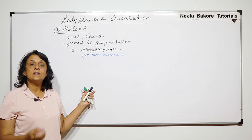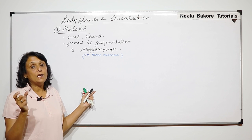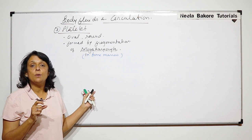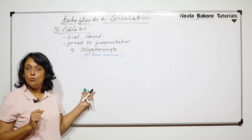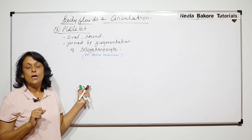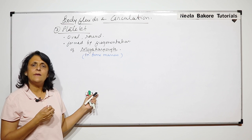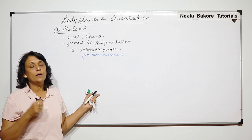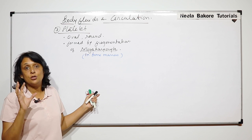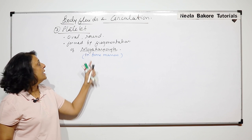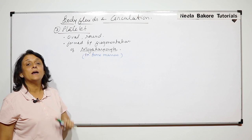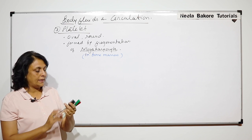Megakaryocyte is called the large cell. It is a cell that is irregular and has a large nucleus, which is why it is called megakaryocyte — 'karyo' is the word we use for nucleus.